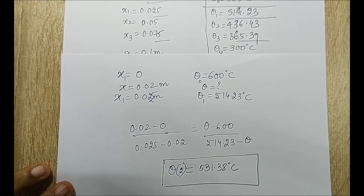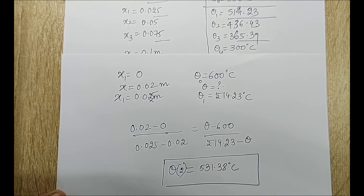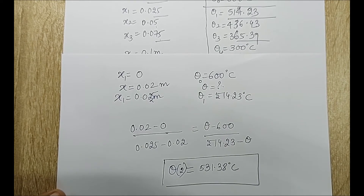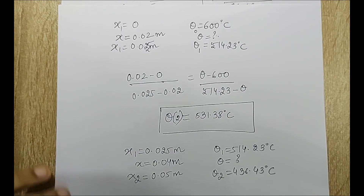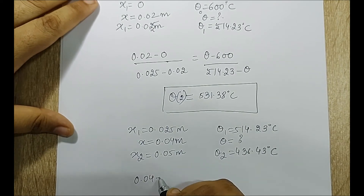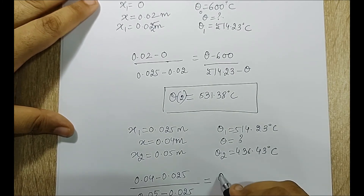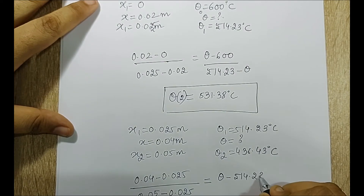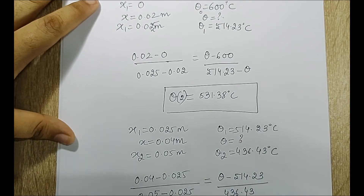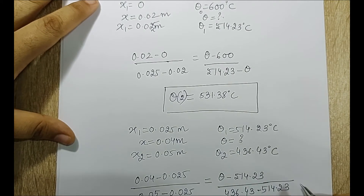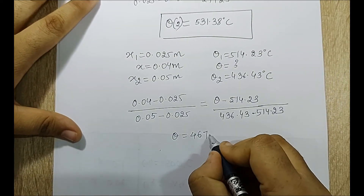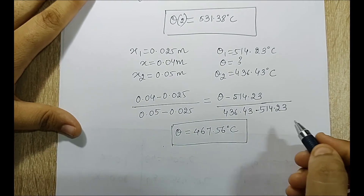For x equals 0.04 meter, interpolating between x1 equals 0.025 (theta_1 equals 514.23) and x2 equals 0.05 (theta_2 equals 436.43): the interpolation gives (0.04 minus 0.025) divided by (0.05 minus 0.025) equals (theta minus 514.23) divided by (436.43 minus 514.23). Solving this gives theta at x equals 0.04 meter as 467.56 degree Celsius.